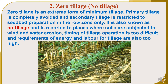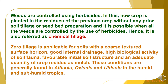Zero tillage is an extreme form of minimum tillage. Primary tillage is completely avoided and secondary tillage is restricted to seedbed preparation in the row zone only. It is also known as no tillage and is resorted to in places where soils are subjected to wind and water erosion, timing of tillage operations is too difficult, and requirement of energy and labor for tillage is also too high. In zero tillage, weeds are controlled by using herbicides. The new crop is planted in the residues of the previous crop without any prior soil tillage or seedbed preparation, and is possible when all weeds are controlled by herbicides — hence it is also referred to as chemical tillage. Zero tillage is applicable for soils with a coarse textured surface horizon, good internal drainage, high biological activity of soil fauna, favorable initial soil structure, and an adequate quantity of crop residue as mulch.